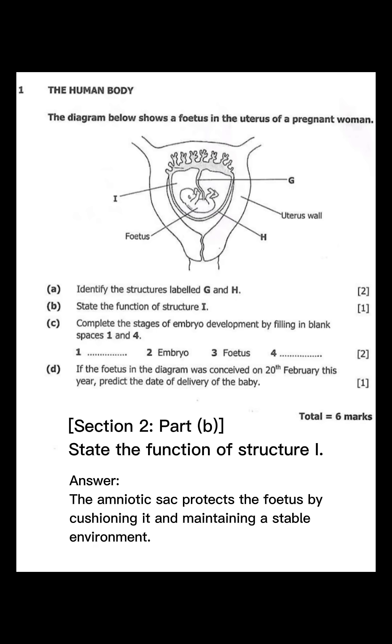Section 2, Part B. State the function of Structure I. Structure I is the amniotic sac. Its function? To protect the fetus by cushioning it against physical shocks and maintaining a stable environment. When writing your answer, keep it clear and concise. The amniotic sac protects the fetus by cushioning it and maintaining a stable environment.